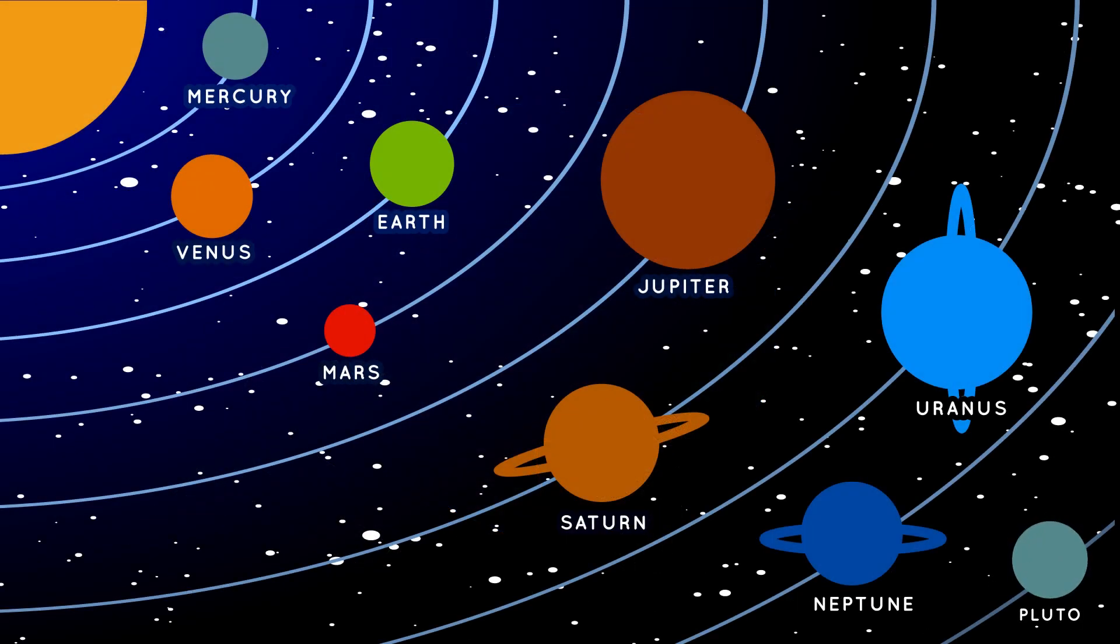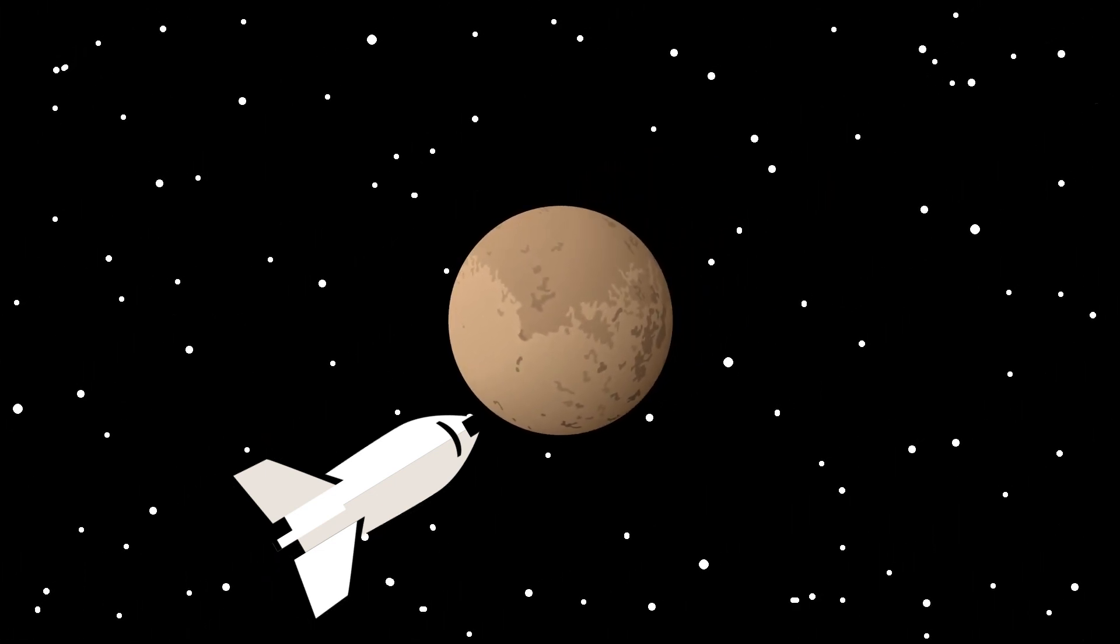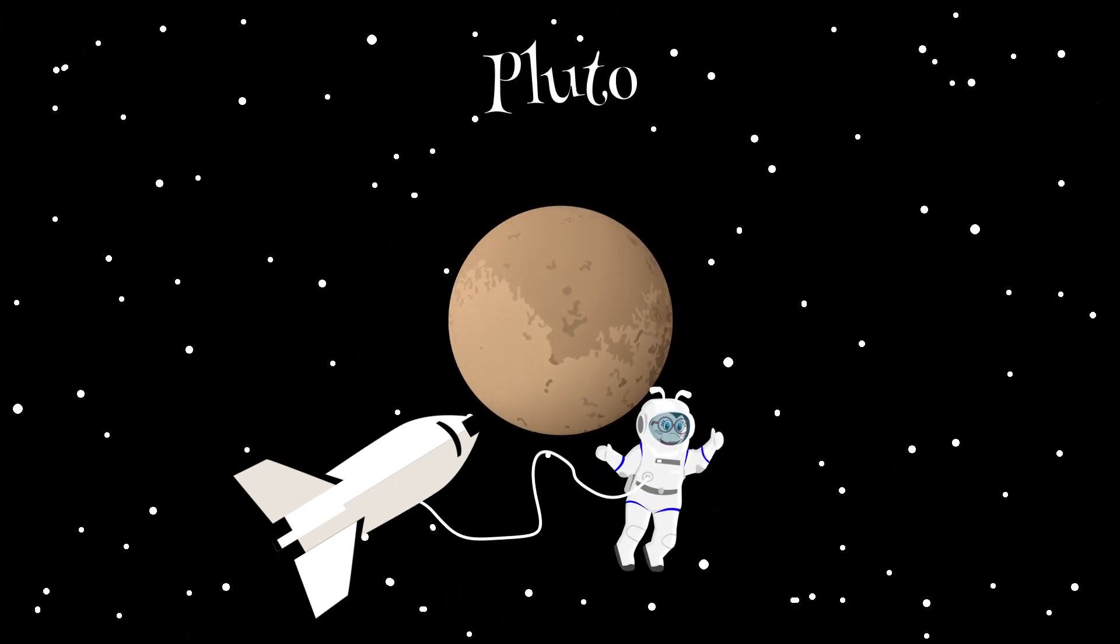Pluto is the solar system's ninth planet. It is small and very far away from our sun. Because of this, some scientists classify Pluto as a dwarf planet instead of a regular planet.